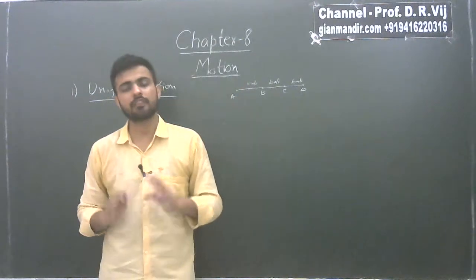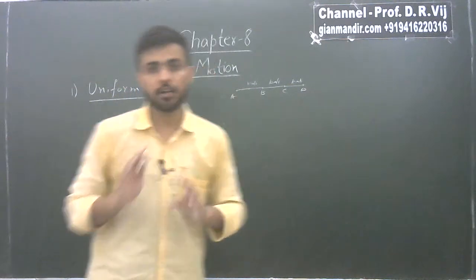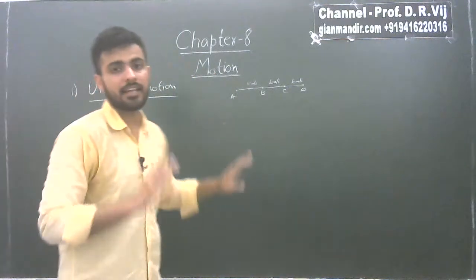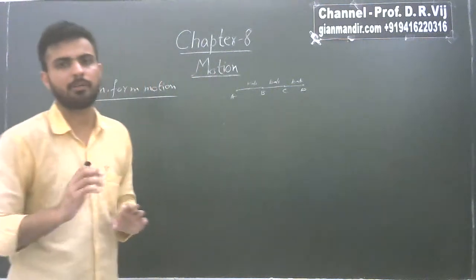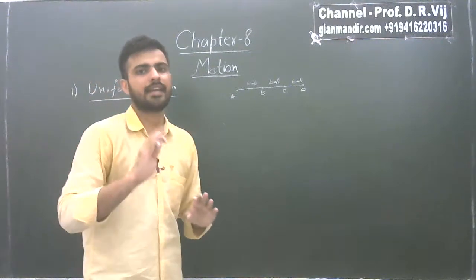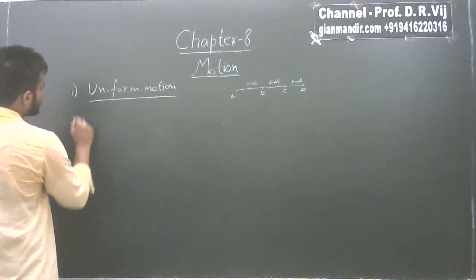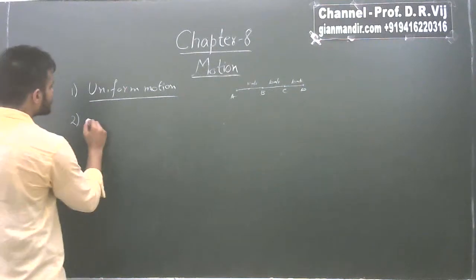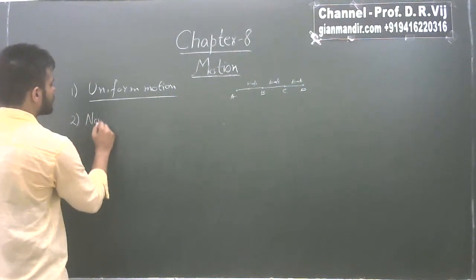Always remember that for calculating uniform motion we use velocity and not speed. Similarly, for acceleration, which we will be discussing next, we also use velocity and not speed. The second type is non-uniform motion.